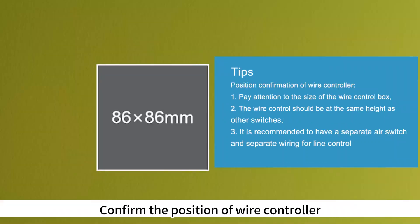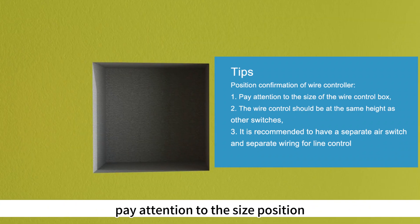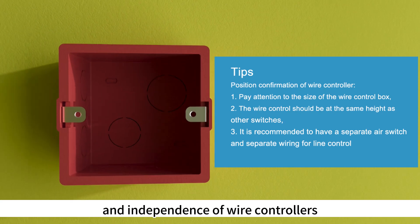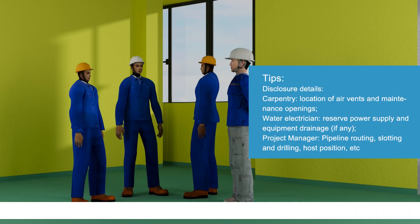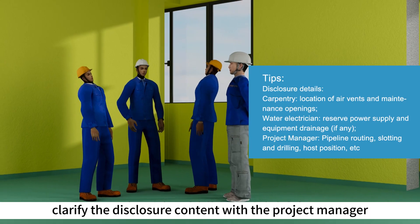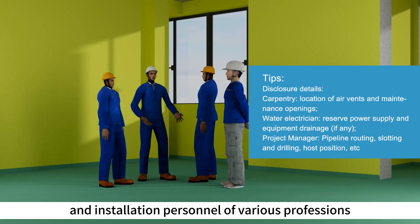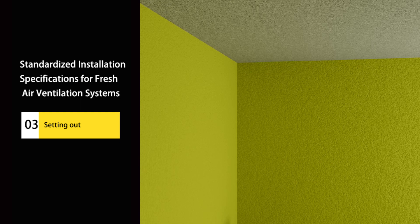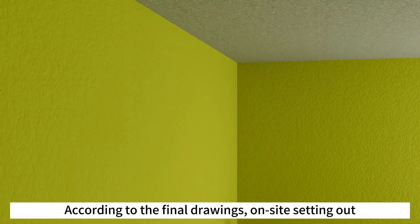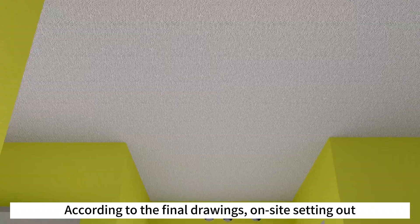Confirm the position of the wire controller, paying attention to its size, position, and independence. Clarify the disclosure content with the project manager and installation personnel of various professions. Then proceed to on-site setting out according to the final drawings.